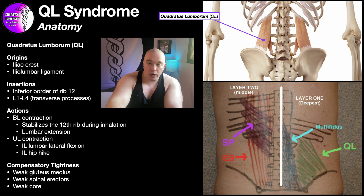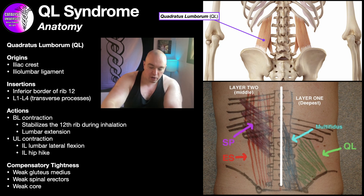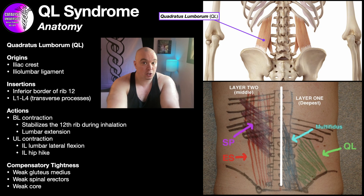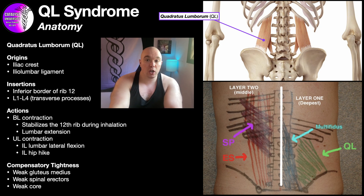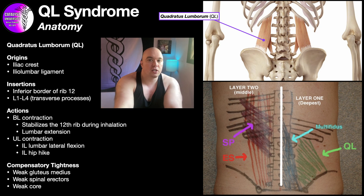Knowing where the QL is generally isn't enough — we want to make sure we're on the right specific spot. This is where communicating with the patient comes in. We put a finger on that spot, maybe dig in a little, and ask: is this exactly where your pain is? Maybe they'll say yes, or they'll guide us up, in, out, or down. We want to make sure we're right on that particular spot, because when we do the manual and eventually self-releases, we want to target the site with a high degree of precision.